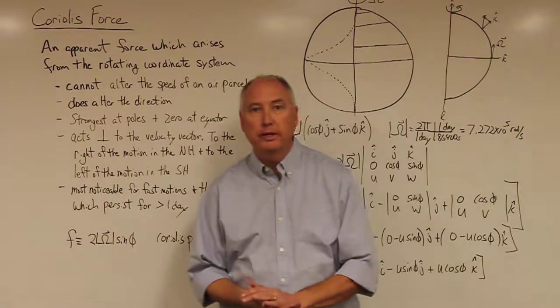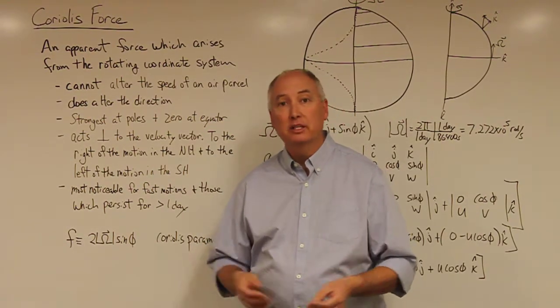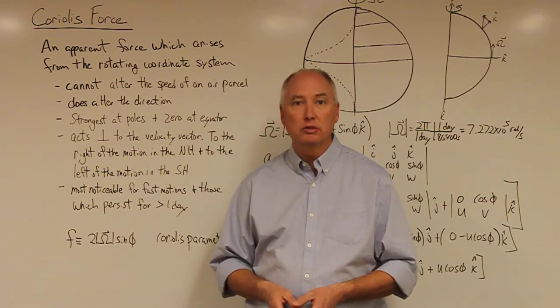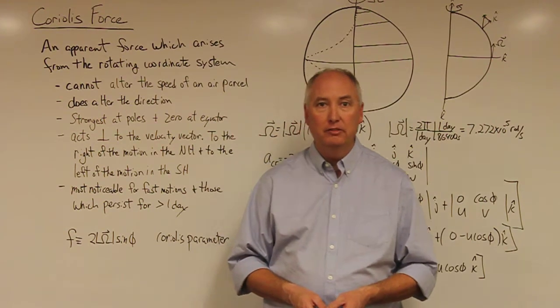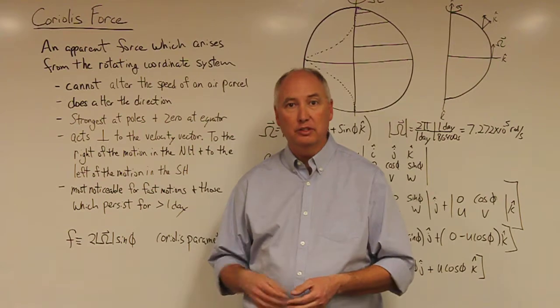Last time we talked about the pressure gradient force, which is the force that causes the wind to blow. Today we're going to talk about the Coriolis force, which is an apparent force due to the rotating coordinate system, which causes a deflection of the air away from a direct thermal circulation from high to low.